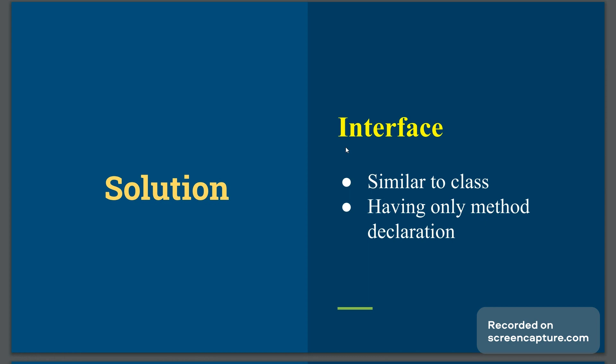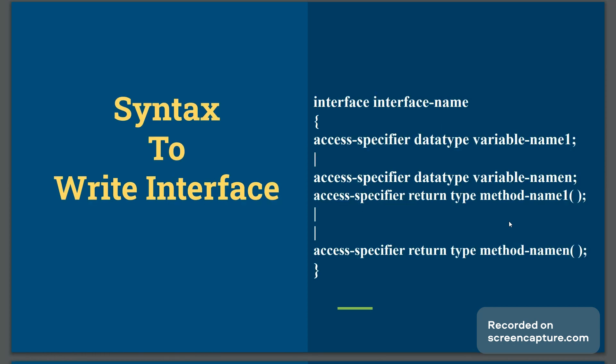The interface has variables, but the important difference is that it holds only method declarations — no method definition, no writing of the body of the function is allowed in the interface. This will solve our purpose of implementing multiple inheritance in Java.